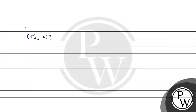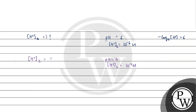Now we need to find the concentrations. The pH of the anode is given as 6, so the concentration of H⁺ at the anode is 10 raised to the power minus 6 molar, since pH = −log[H⁺]. The pH at the cathode is 4, so the concentration of H⁺ at the cathode is 10 raised to the power minus 4 molar.